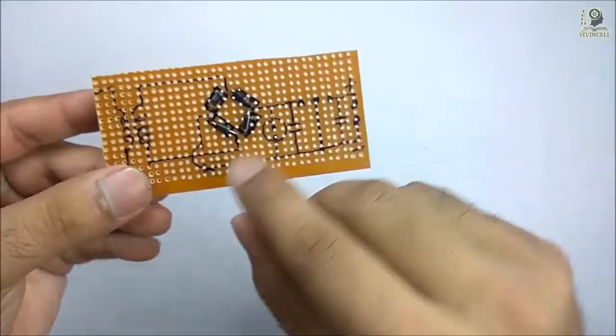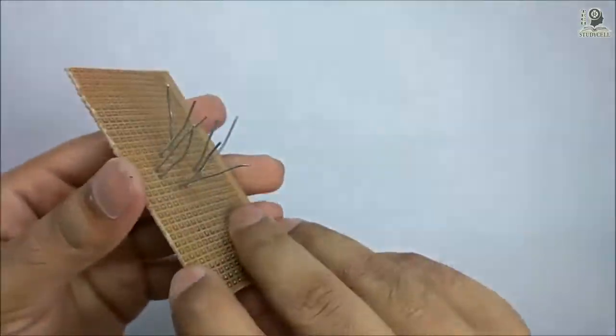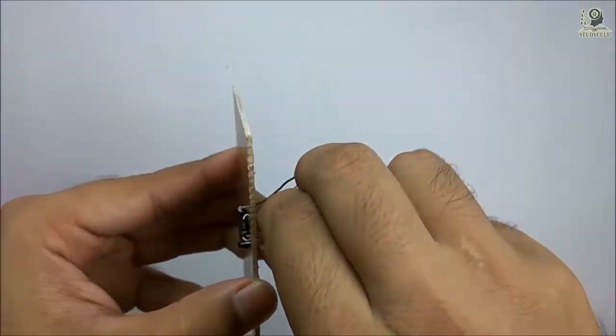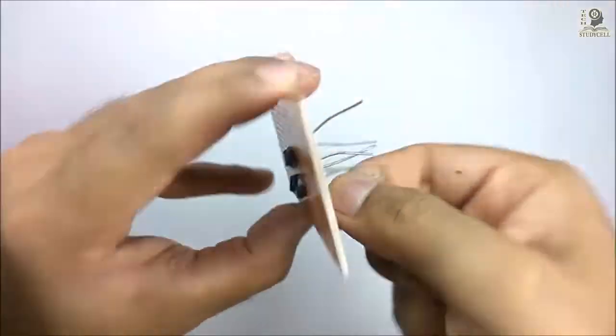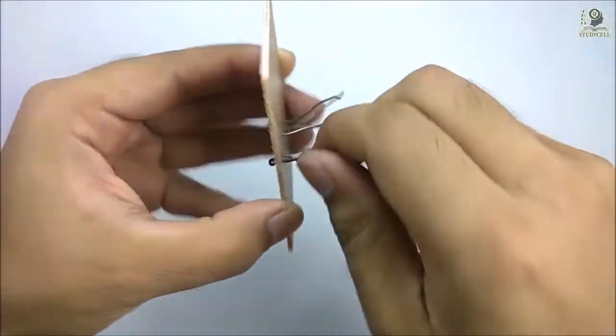Now you can see I have placed the fourth diode. Now I have to join the terminals of the diode according to the schematic.